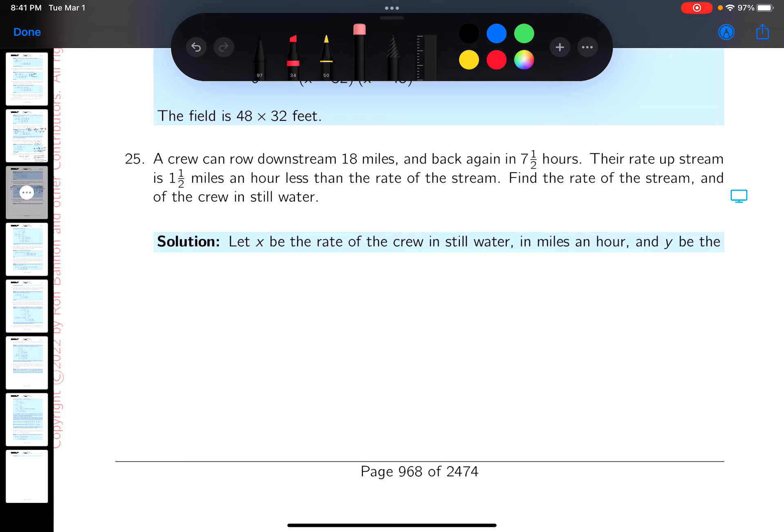Okay, so reading through problem 25: a crew can row downstream 18 miles and back again in 7.5 hours. The rate upstream is 0.5 miles per hour less than the rate of the stream.